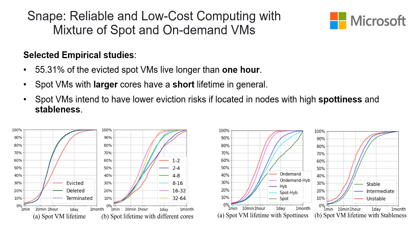For the image on the right, we define two metrics to evaluate the status of machine nodes. The first one is Spotness, which evaluates the percentage of Spot cores in the nodes. The second one is Stableness, defined as the variation of remaining cores over time. Spot VMs tend to have lower eviction risk if located in nodes with higher Spotness and Stableness.